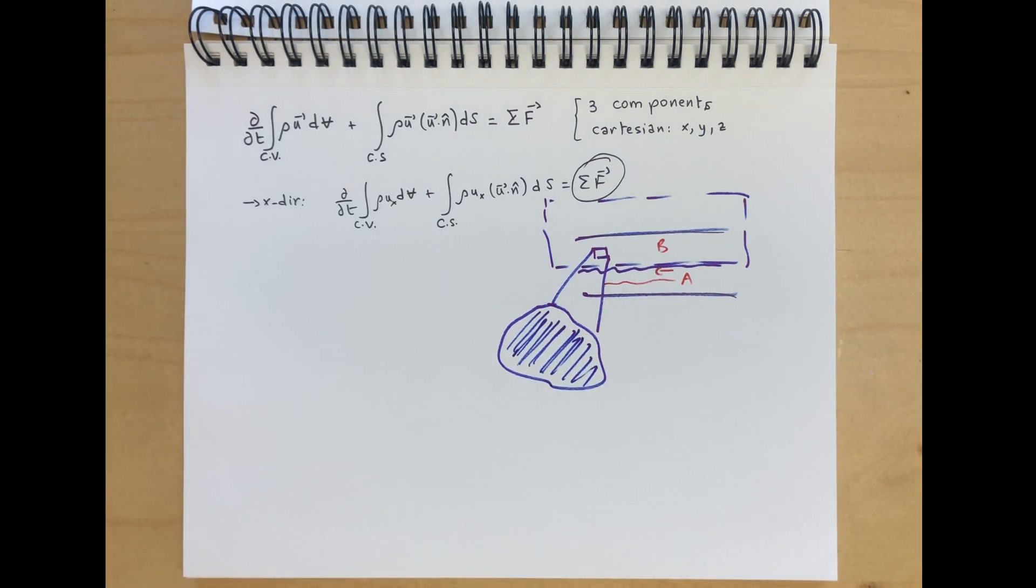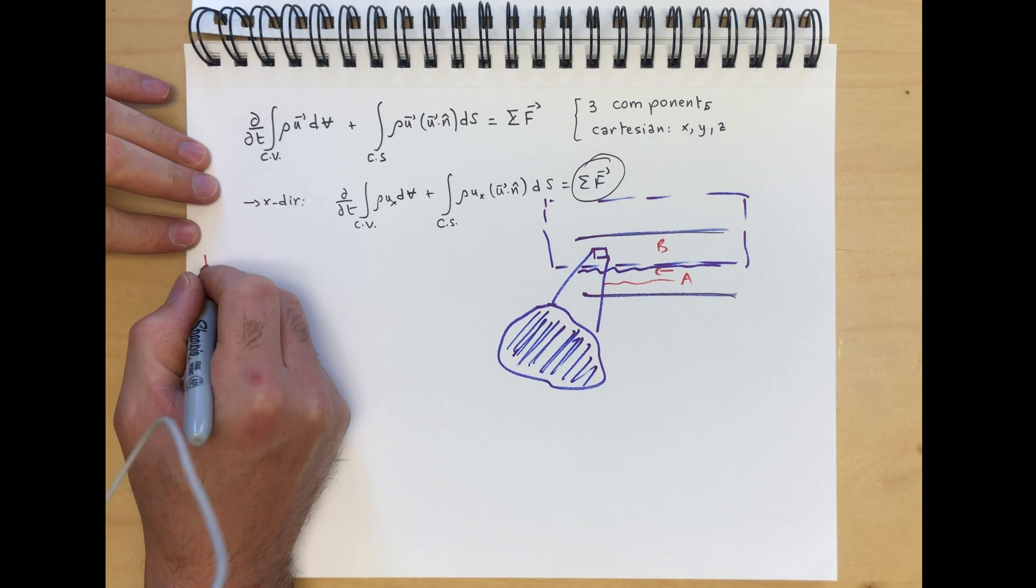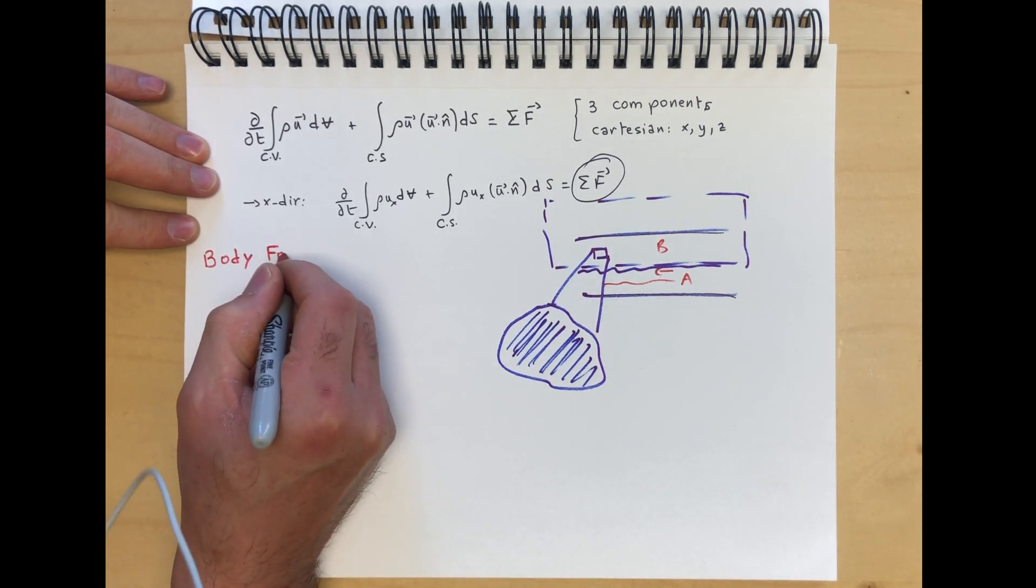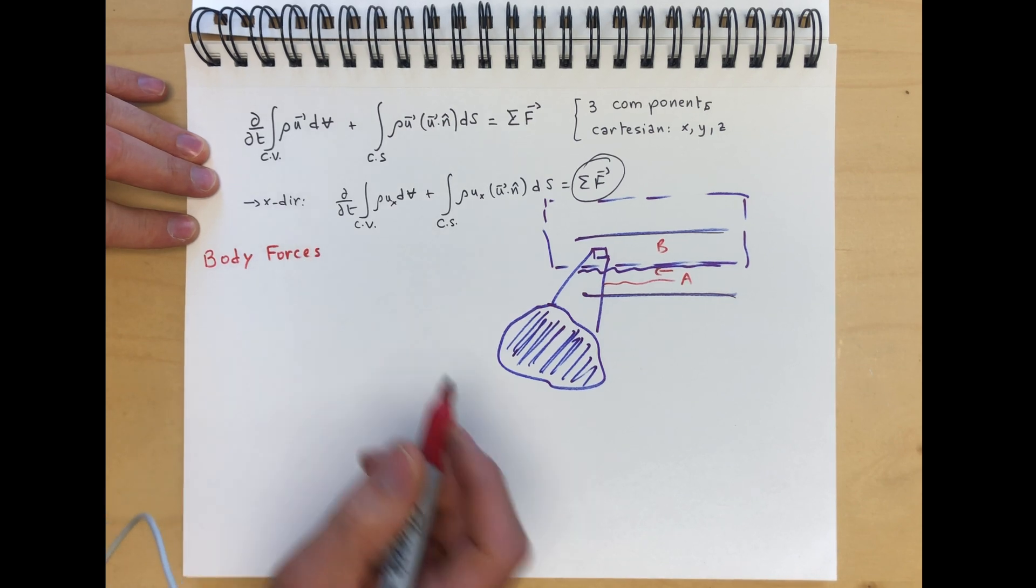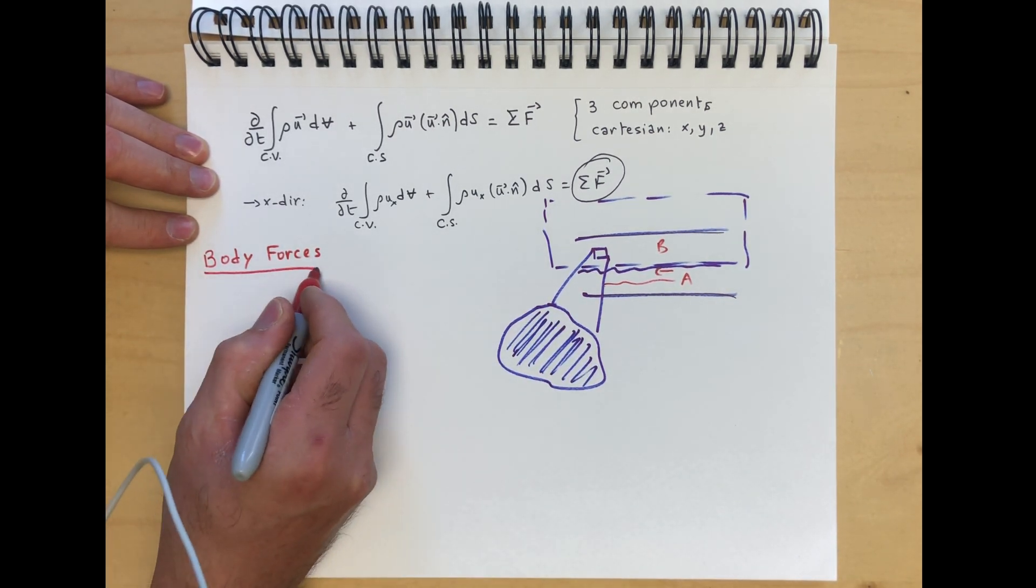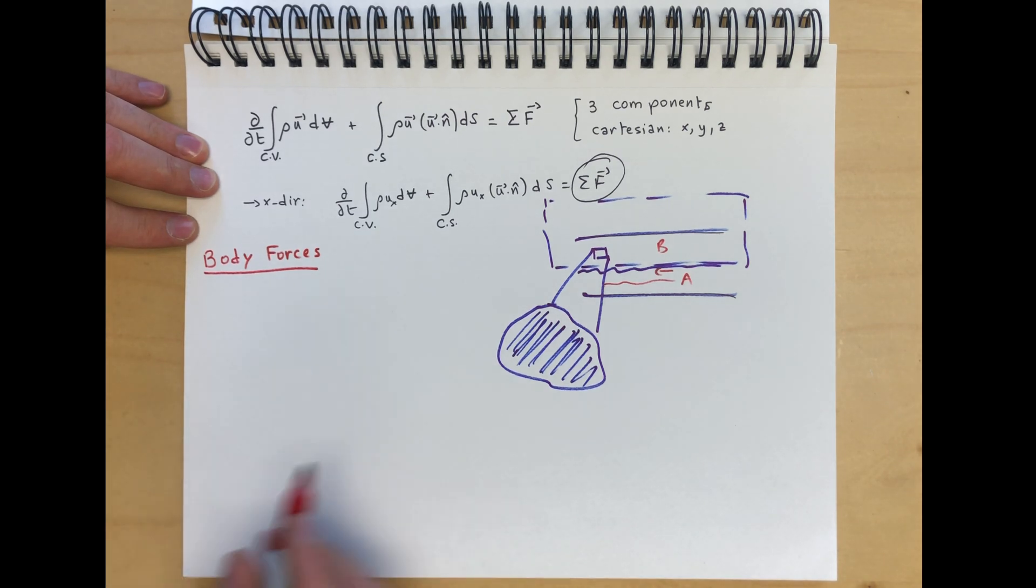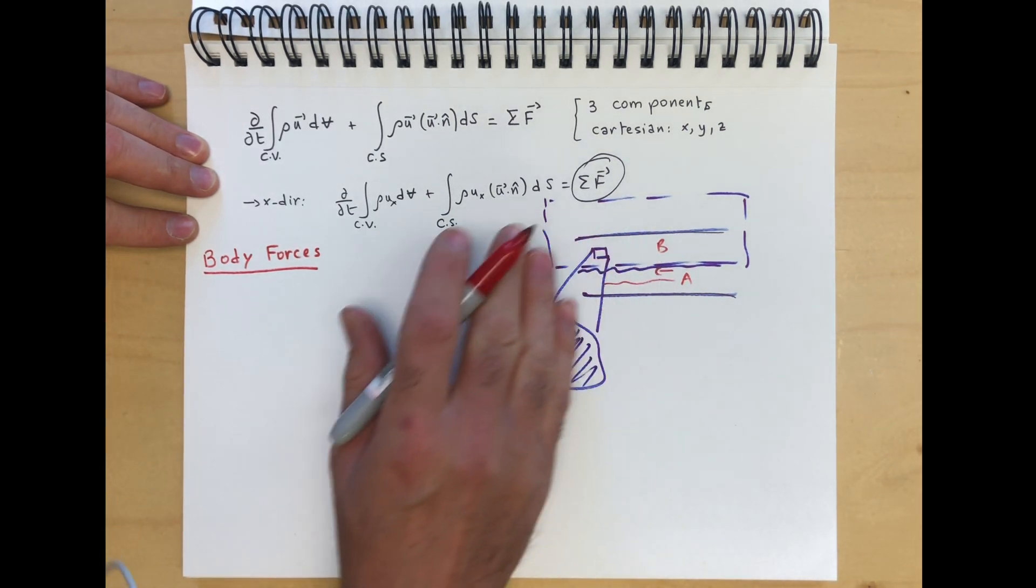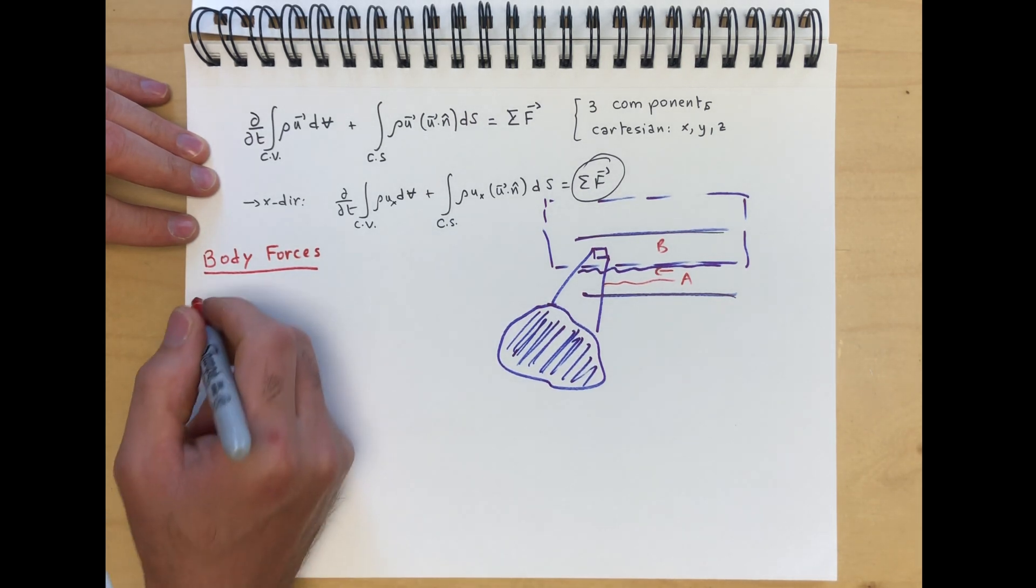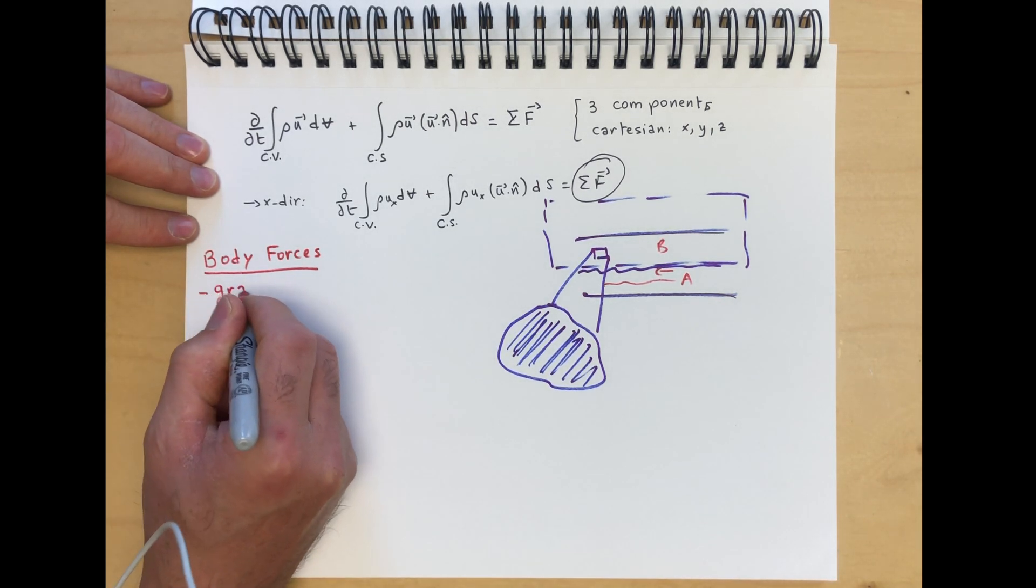We're going to categorize the forces, as usual, into two types. There's the body forces. Let's talk about body forces. And we're going to talk about surface forces. But for body forces, these are forces that act on the entire volume of the fluid. These are external forces exerted by some external field. For example, gravity.